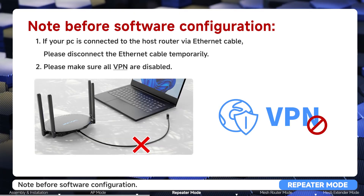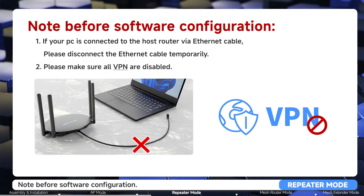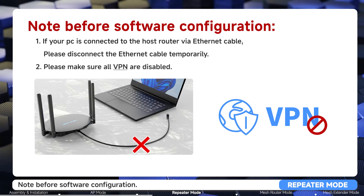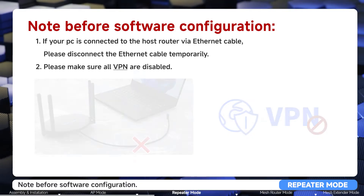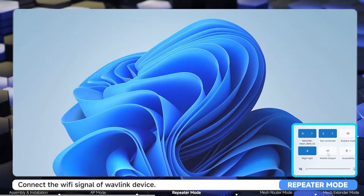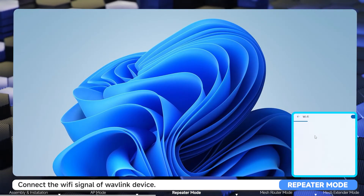If your PC is connected to the host router via ethernet cable, please disconnect it temporarily. Make sure all VPNs are disabled, then connect to the Wi-Fi signal of the Wavlink device.